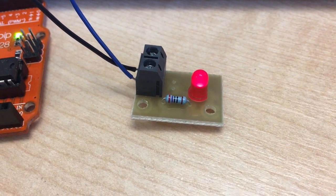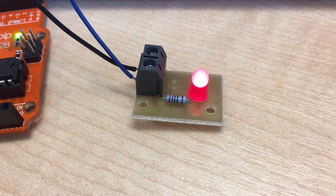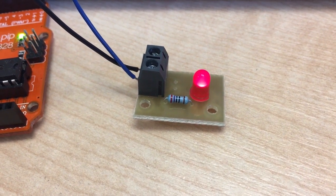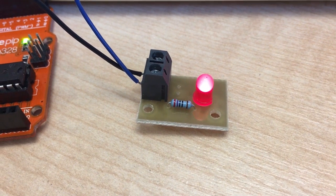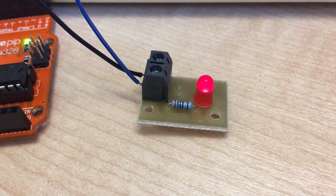So what analog write allows us to do is write voltages that aren't just 0 or 5 volts. So we can write voltages between 0 and 5 volts. Now, in this case, that's allowing us to fade this LED.